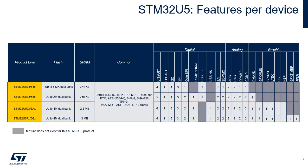This table shows an overview of the products in this series. The STM32U535/545 products offer the best ultra-low power features with reduced memories and peripheral set. The STM32U575/585 products offer ultra-low power features with enhanced memories and peripheral set.